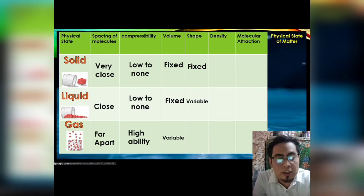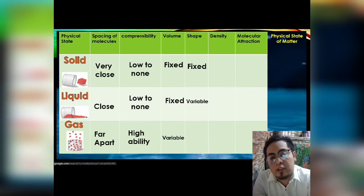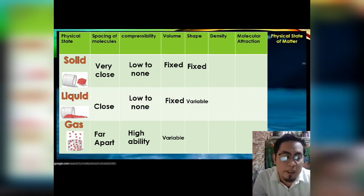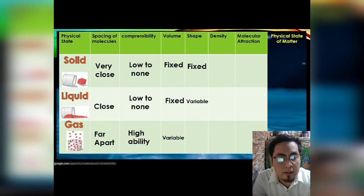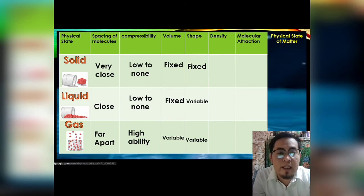The shape of liquid depends on its container. When you put liquid in an ordinary glass, it takes the shape of that glass. If you put liquid in a circle-type glass, it takes the shape of the circle. Gas is also variable for the same reason — its particles occupy the shape of their container, for example, a balloon.